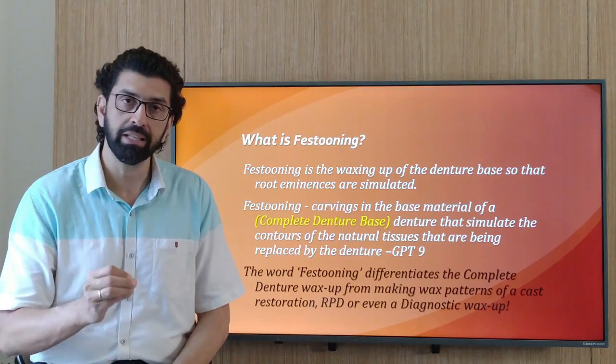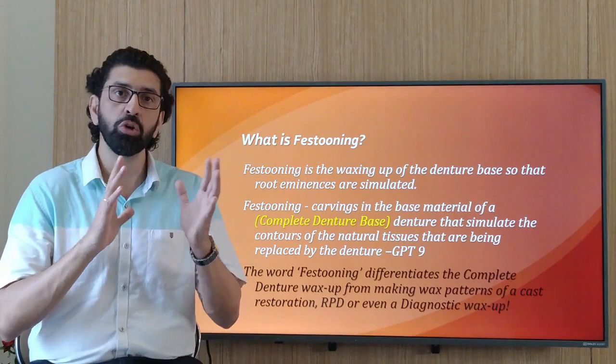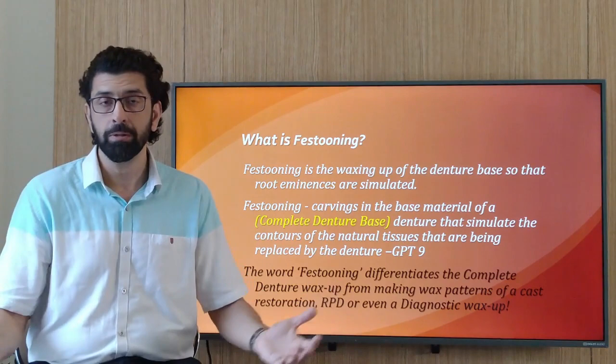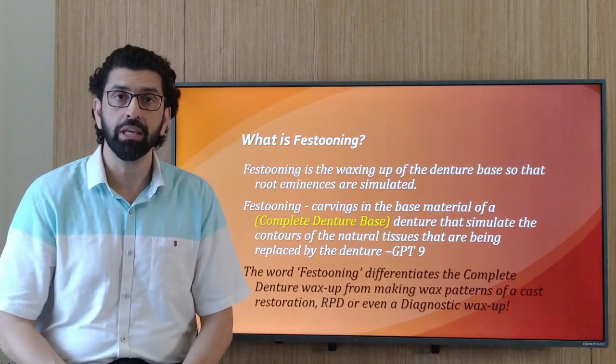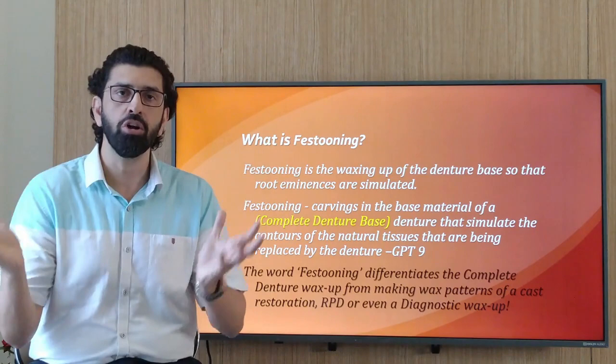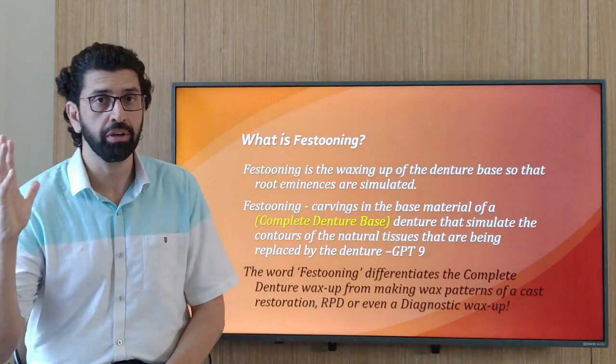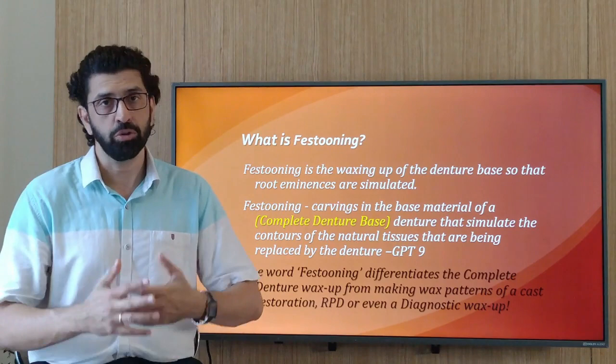What is important here is that for a long time people thought only root carvings or root eminences were called festooning. But GPT-9 makes it clear that it is not only the root eminences but also other associated natural tissue being duplicated by the denture — all of that carving comes under the umbrella of festooning. So festooning is a great word to differentiate the wax contouring of a complete denture from wax contouring for any other prosthodontic work.